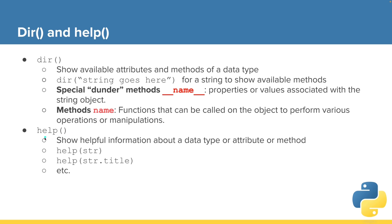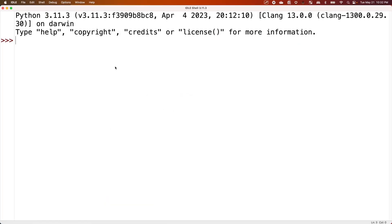The help method can show helpful information about a data type or attribute or method. We can call help and then put a string in there, or we can put our string in here dot title or dot capitalize. We could put our string literal or a variable in there. Let's show you a few examples of dir and help and how these show some useful things about these objects.